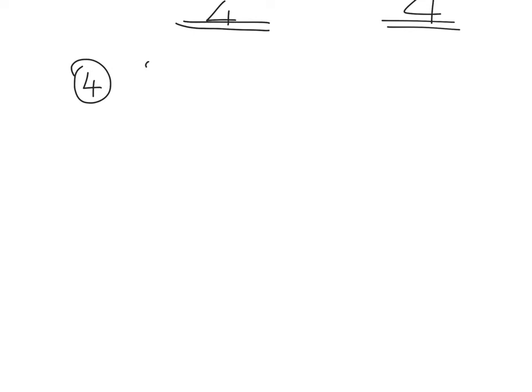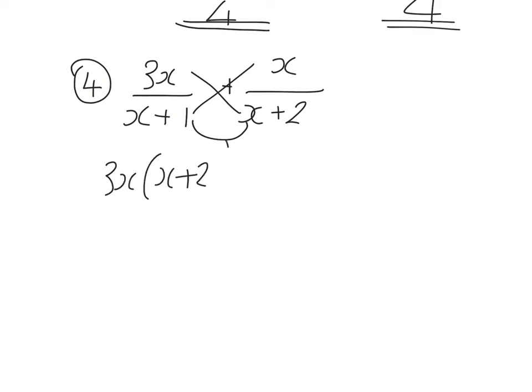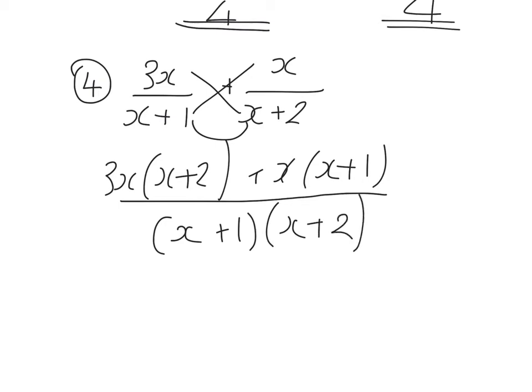Example 4. 3x over x plus 1 plus x over x plus 2. So kiss and smile again. 3x bracket x plus 2 plus x bracket x plus 1 over x plus 1 times x plus 2. Now the denominator that looks as if it's quite tidy, so I can leave that be. But I'm going to tidy up the top.